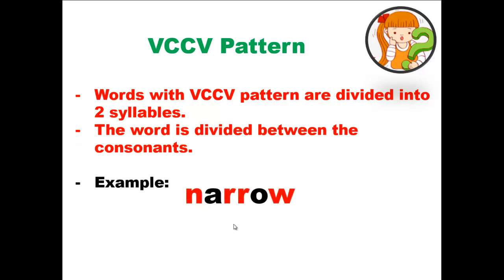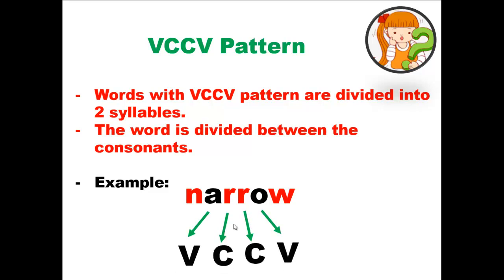For example, narrow. Let's check the pattern: first vowel sound, another consonant, another consonant, and a vowel sound. So this word follows the VCCV pattern. It's made up of two syllables and the word should be divided between the consonants. The first syllable will be 'nar,' the second syllable will be 'row,' and the word is going to be narrow.